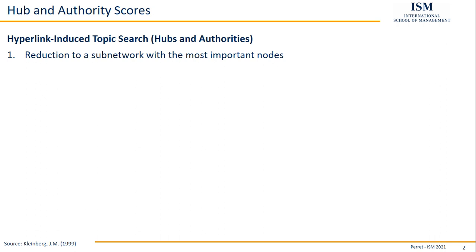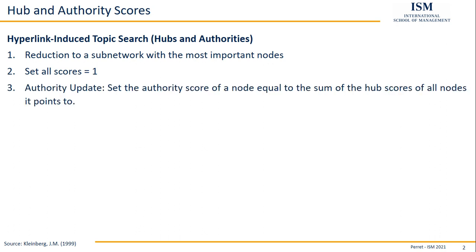Once you have done this, or you skipped this step, the real calculation starts. In the beginning, set all scores — all hub scores and all authority scores — to zero. Next, start with the authority update. For each authority score, you set it equal to the sum of all the hub scores of nodes pointing to it.